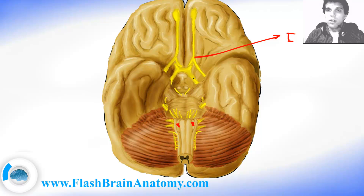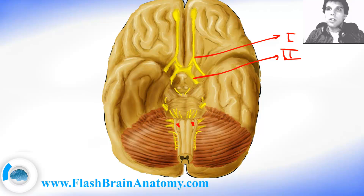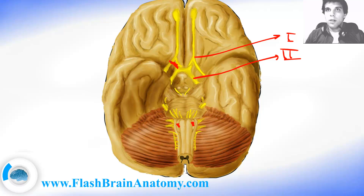The second cranial nerve is the optic nerve. This part over here is called the optic chiasm — it is the place where the nerves from the left and the right side exchange fibers. From here it is not the optic nerve but the optic tract, and the optic tract goes to the eye and innervates the eye.